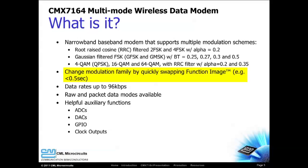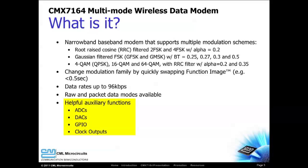The modulation family is changed by loading a different function image file. The CMX7164 can support data rates up to 96 kilobits per second. Both raw and packet data modes are supported. The CMX7164 also includes helpful auxiliary functions that reduce your external parts count and bill of materials cost.